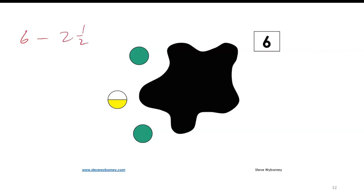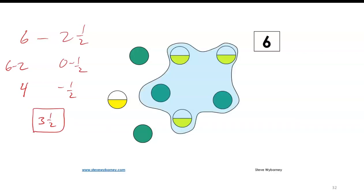In terms of mixed numbers, you can treat this as six minus two and then zero minus one half. Six minus two is four, and then minus one half gives me three and a half. So there should be three and a half underneath that splat. If I check it, I see there is one, two, and then two halves, three and a half. So it does check.